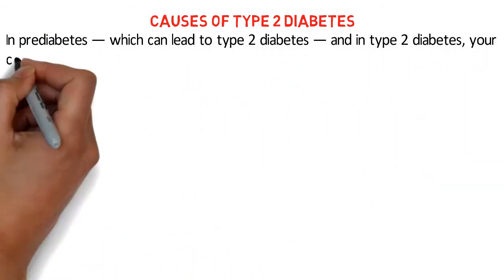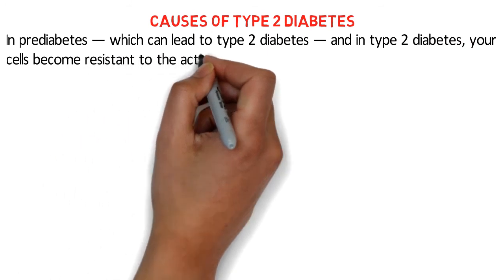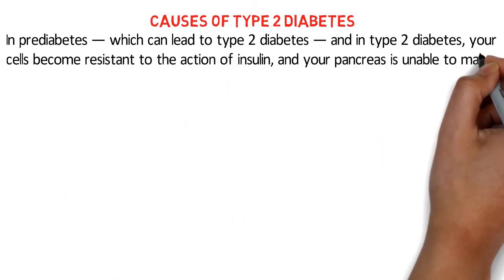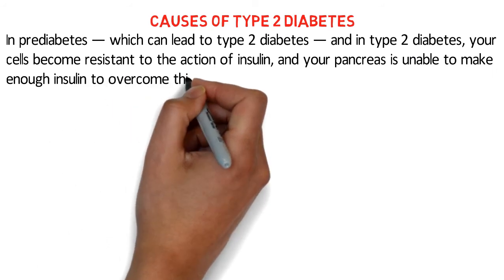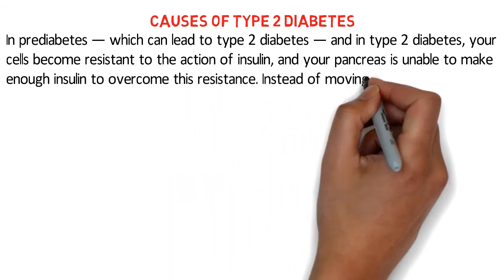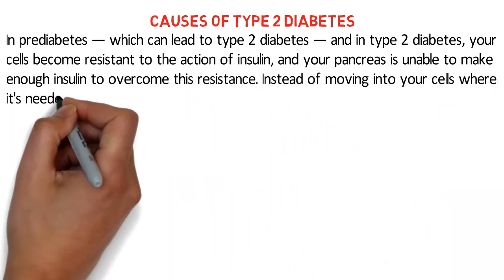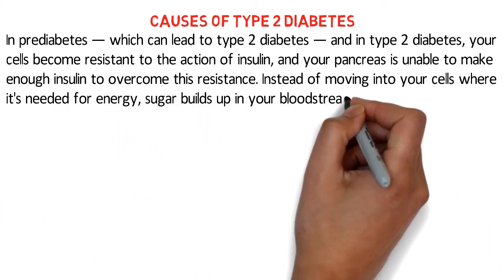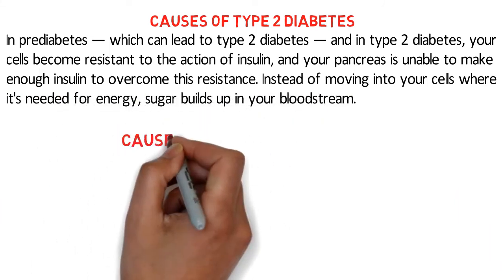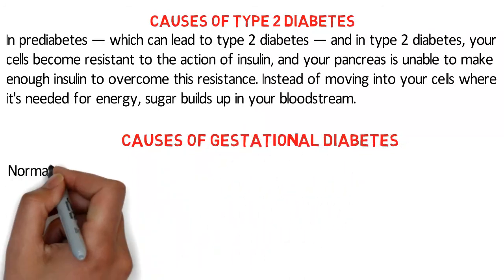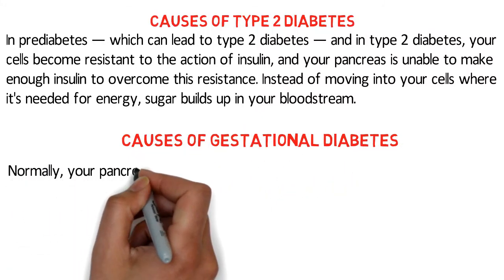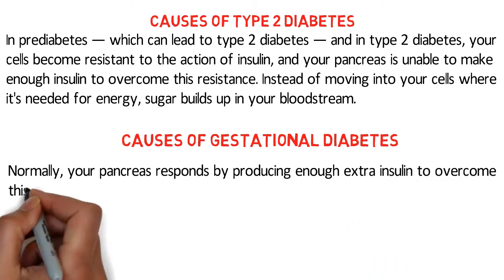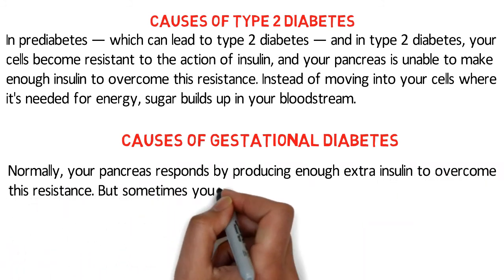Causes of prediabetes and type 2 diabetes: in prediabetes, which can lead to type 2 diabetes, and in type 2 diabetes itself, your cells become resistant to the action of insulin and your pancreas is unable to make enough insulin to overcome this resistance. Instead of moving into your cells where it's needed for energy, sugar builds up in your bloodstream.